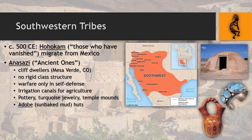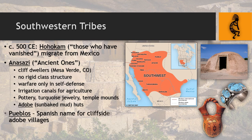Those who didn't live in cliff dwellings — many other southwestern tribes — lived in adobe huts: rounded huts made of sun-baked mud that hardens and holds up well given how little rainfall there is in the region. The Pueblos is the name given to cliffside adobe villages by the Spanish specifically — which is why you hear about Pueblo Indians.